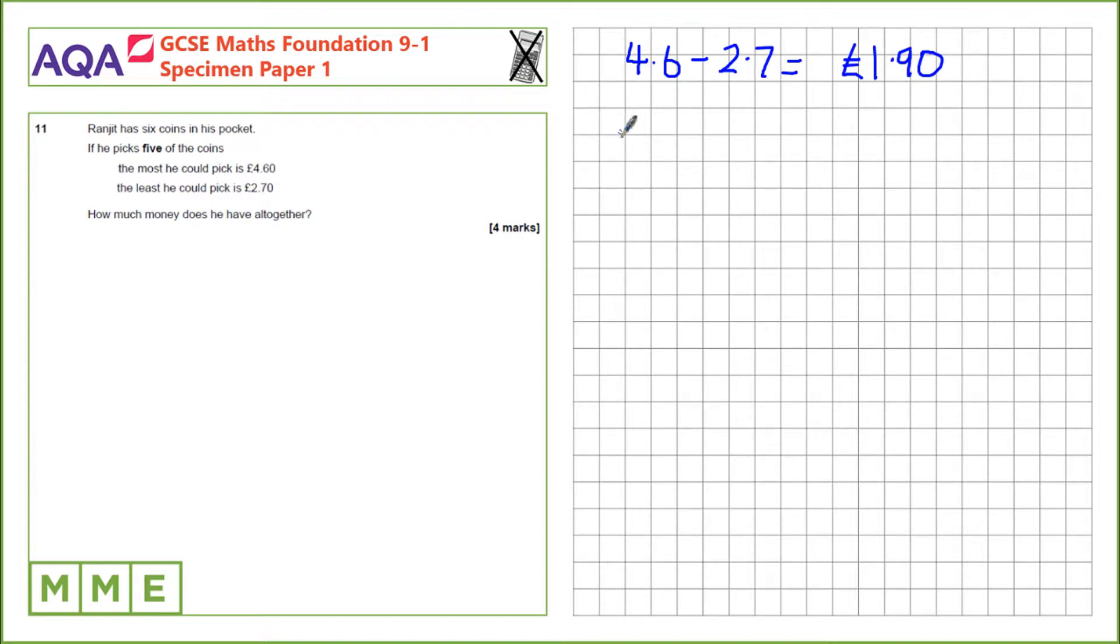So if he picks a £2 coin in the £4.60 pick, we can look at the difference here and see what it must have been swapped for. The £2 coin take away the difference is 10p. So he must have swapped his £2 coin for a 10p piece when he picked £2.70. That means he must have a 10p piece left in his pocket.